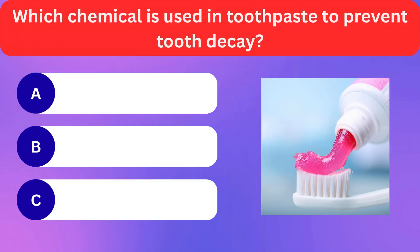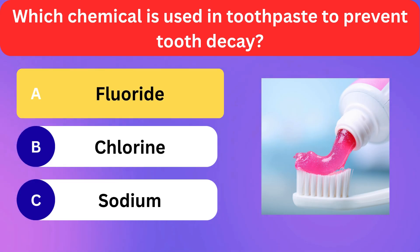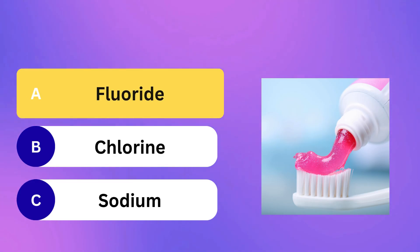Which chemical is used in toothpaste to prevent tooth decay? Fluoride, Chlorine, Sodium. Correct answer is fluoride.